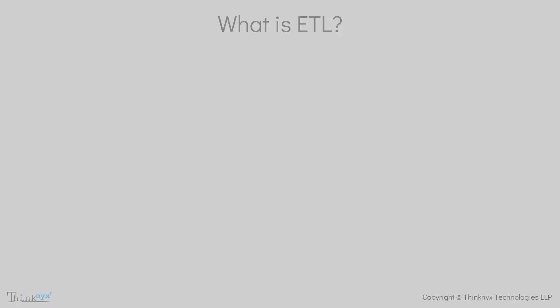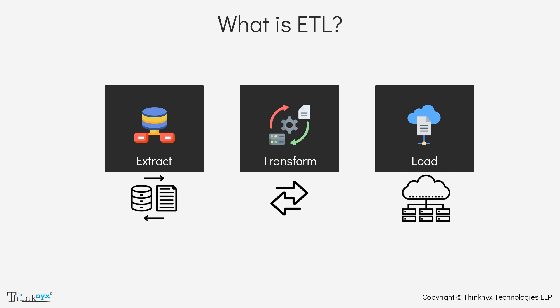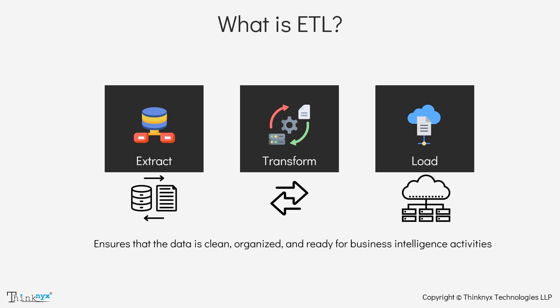Now let's break down ETL, which stands for Extract, Transform, Load. ETL Pipelines focus specifically on three key steps. First, data is extracted from various sources, then transformed into a suitable format, and finally loaded into a target data warehouse or database. This process ensures that the data is clean, organized, and ready for business intelligence activities.